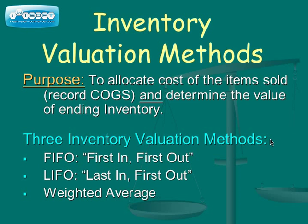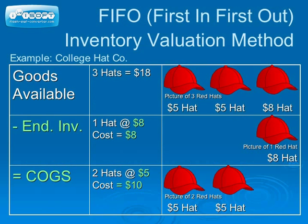We will briefly go over three inventory valuation methods, which are FIFO referring to first in, first out; LIFO referring to last in, first out; and weighted average. This slide demonstrates how College Hat Company would record inventory and cost of goods sold using the first in, first out method.